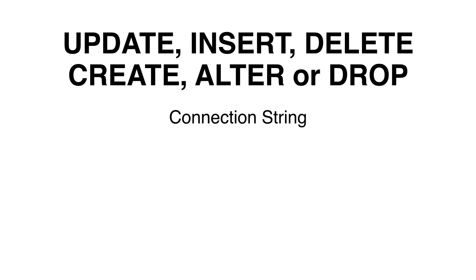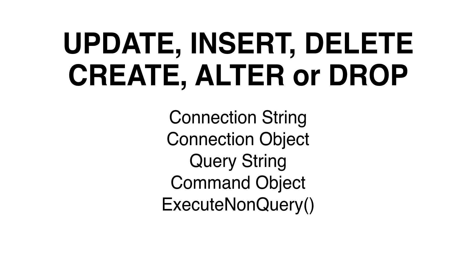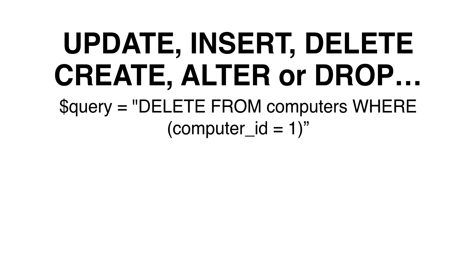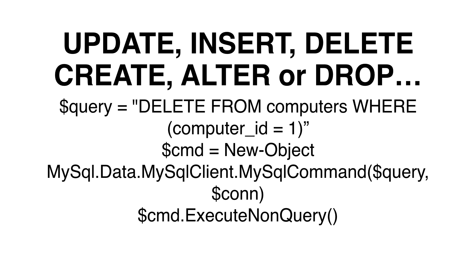To be able to use UPDATE, INSERT, DELETE, CREATE, ALTER, or DROP queries, we need our connection string, our connection object, a query string, and that must be set to a command object. Now that we have a command object, we can use the ExecuteNonQuery method within the command object to execute the query on the MySQL server instance. Here is an example of how to run the ExecuteNonQuery method with a DELETE statement: we create a query string variable with the DELETE statement, then create a command object variable with the query string and connection variable, and use ExecuteNonQuery to execute the DELETE statement.